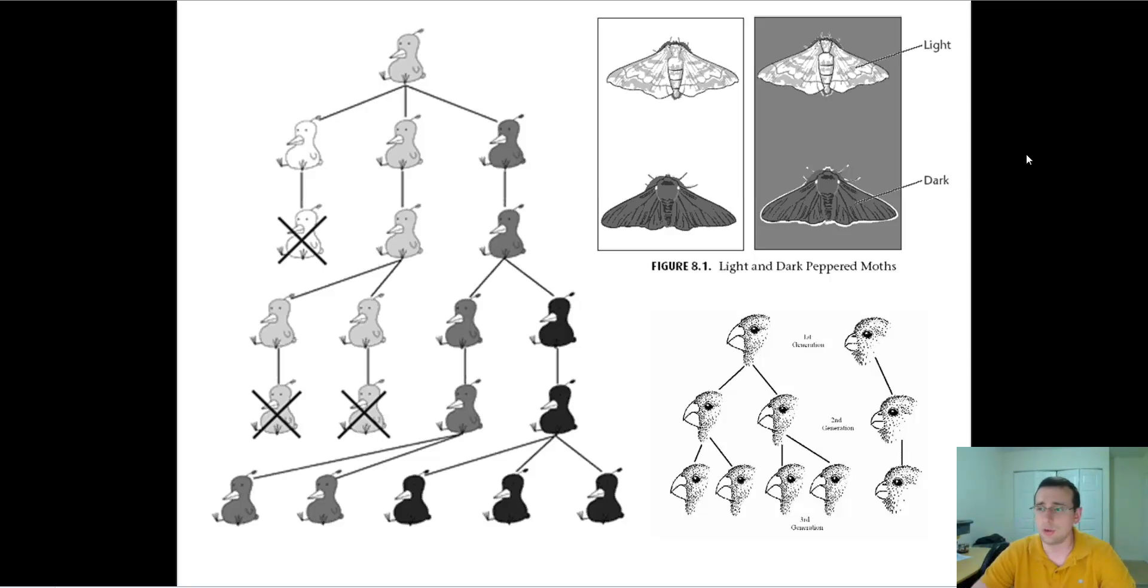There's also neutral mutations and those are the ones that actually evolve very quickly because they can change over and over again without either being advantageous or disadvantageous. So they're actually going to change a lot.